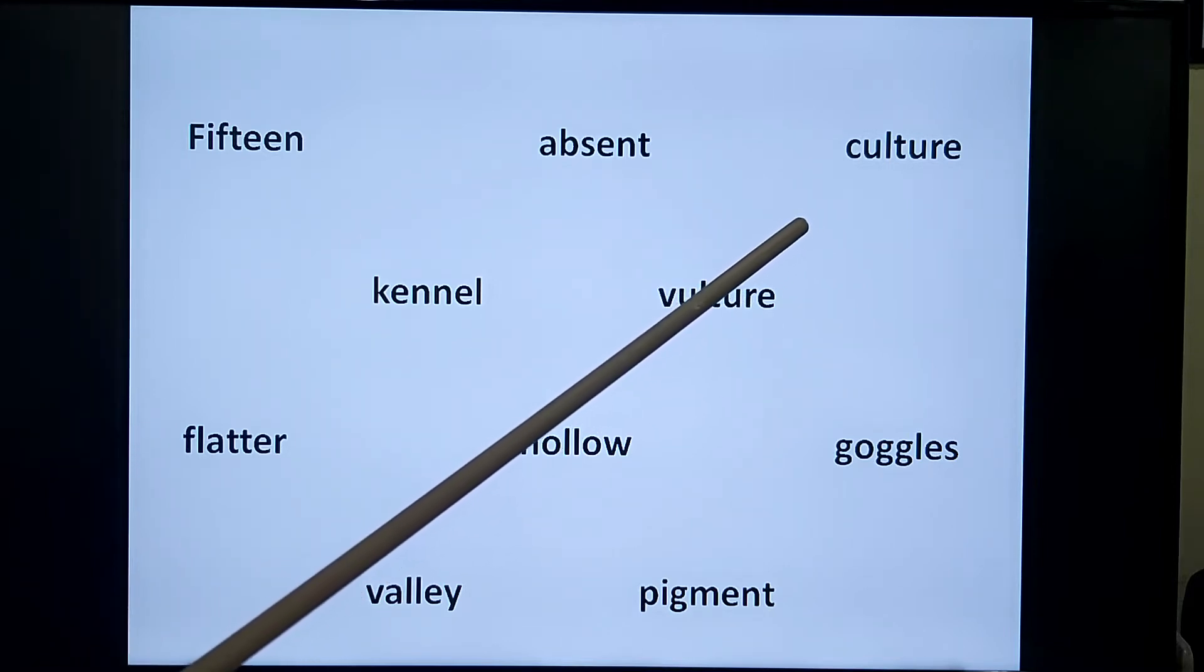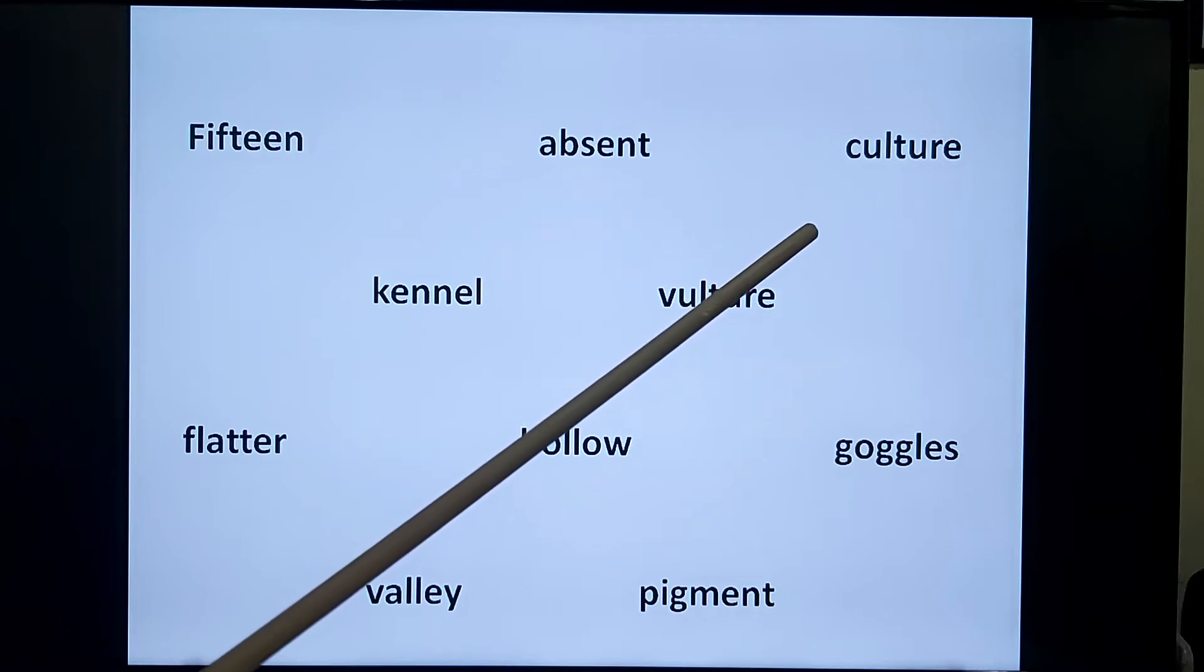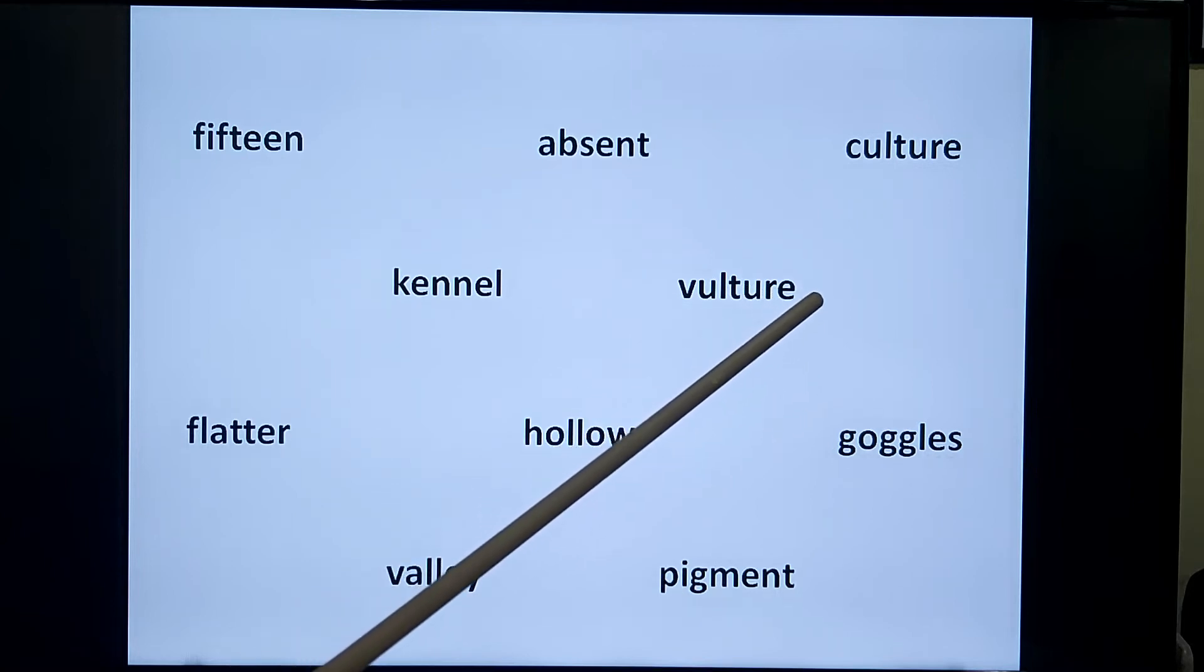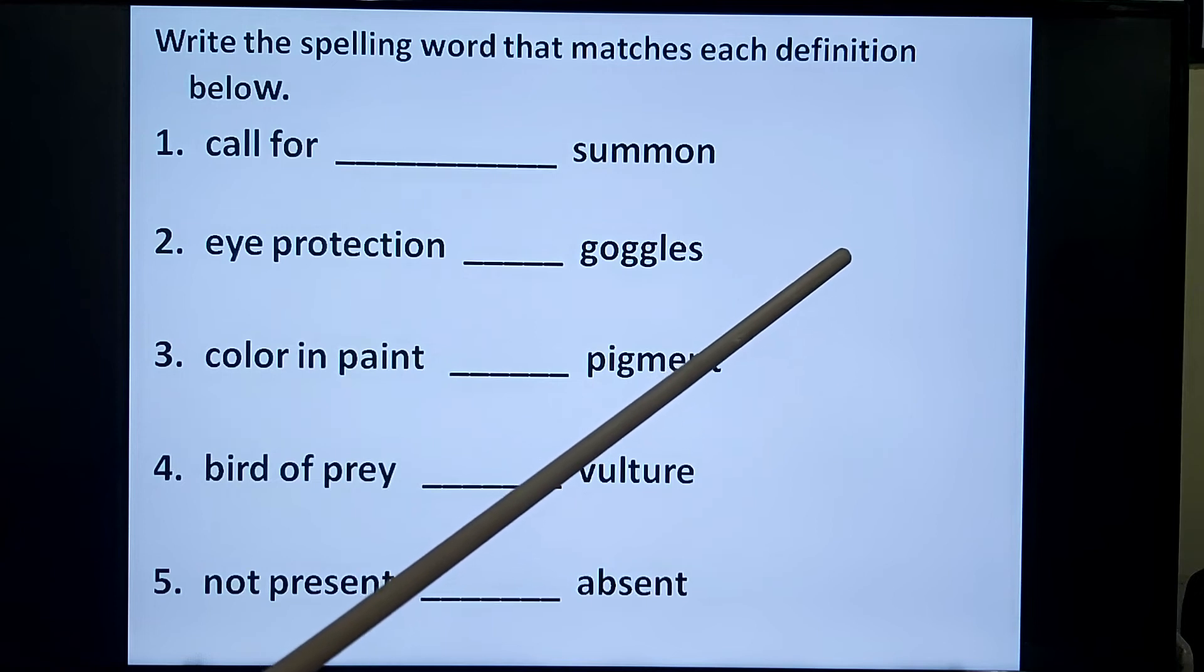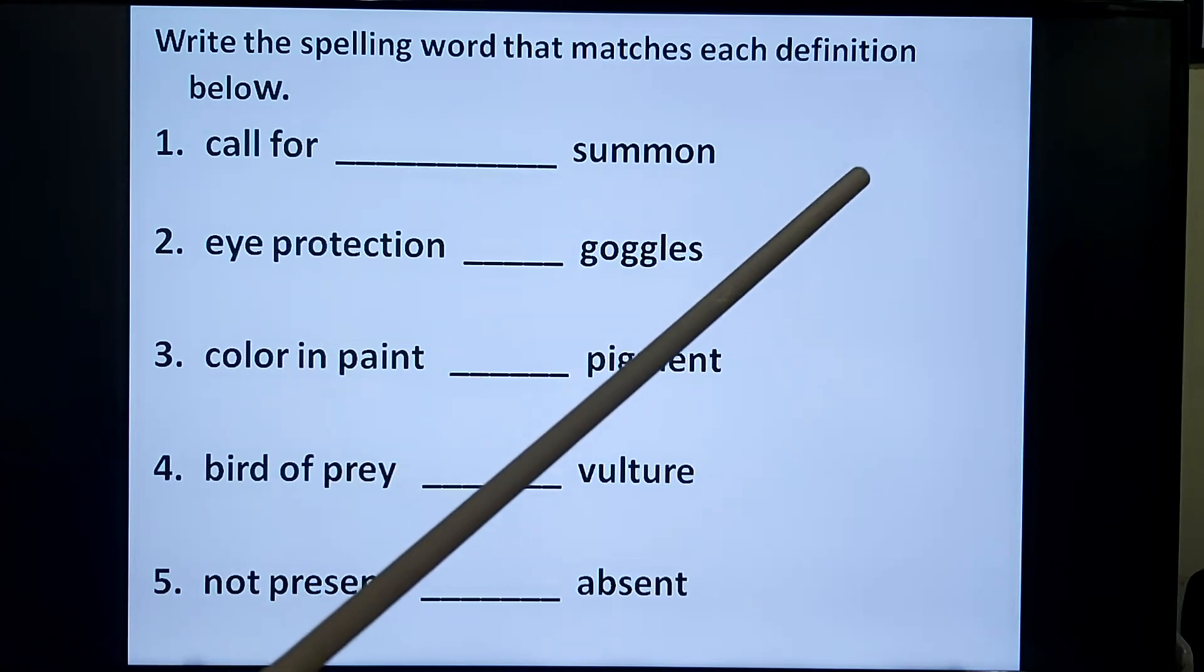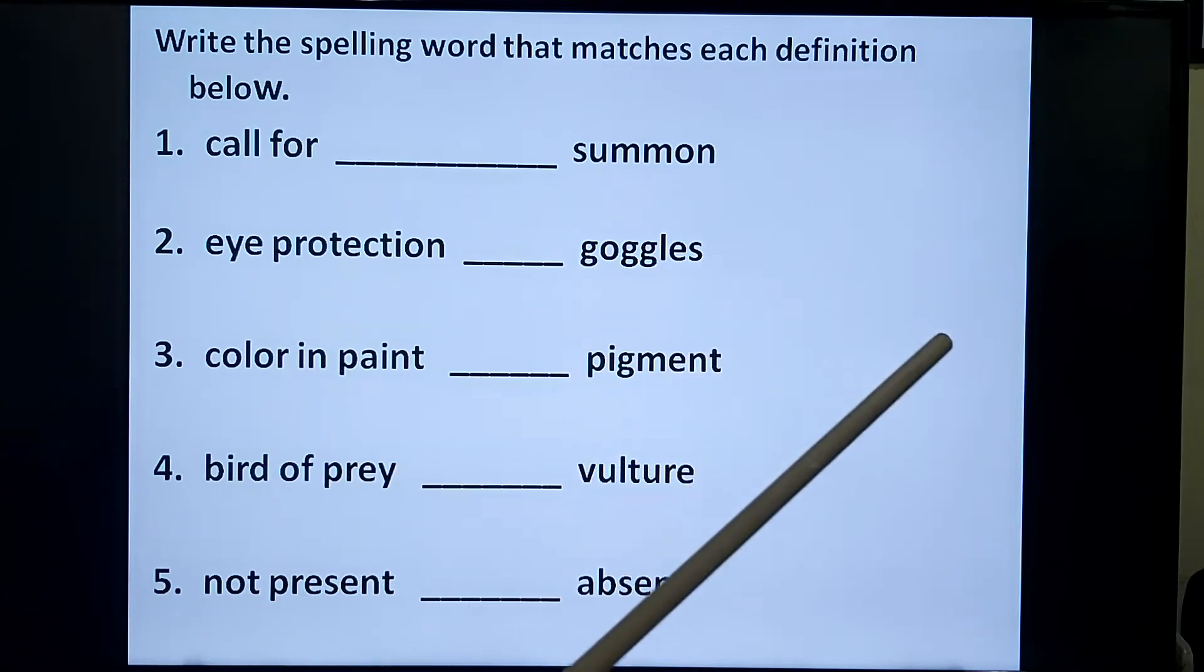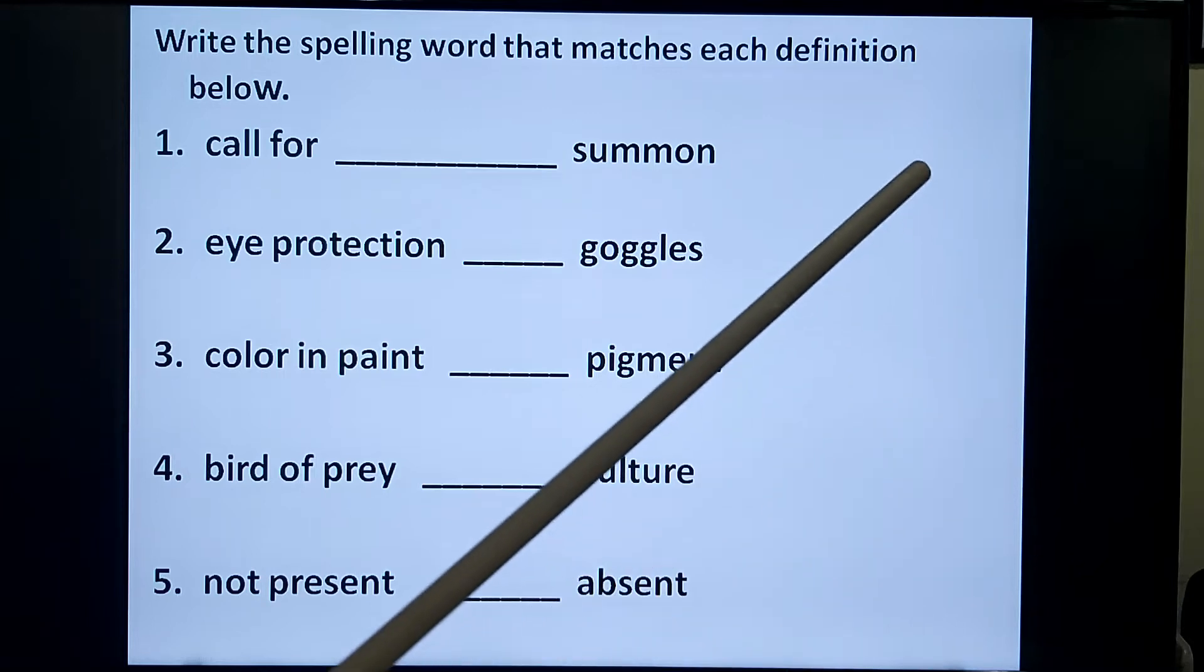Now these words you would find in your book. Twenty words: fifteen, absent, culture, kennel, vulture, flatter, hollow, goggles, pigment. Write the spelling word that matches each definition below.